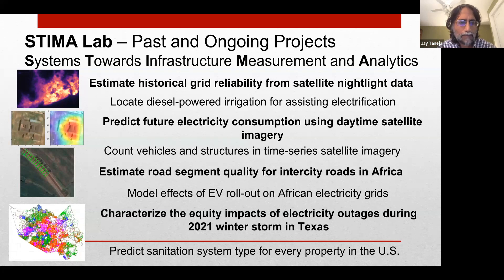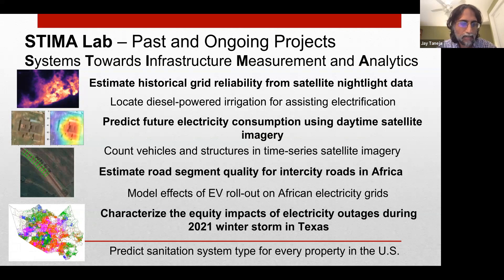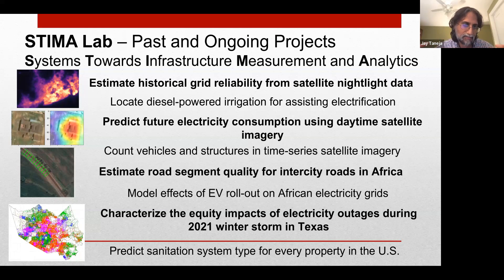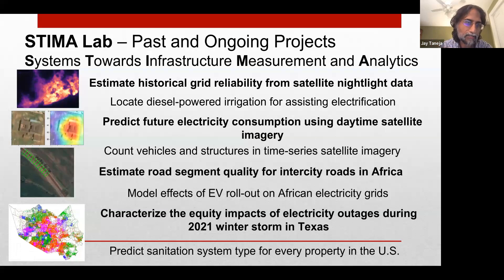We're really thinking about what might be different in developing regions and infrastructure systems because of the constraints or other local conditions. The grand majority of the work is in Africa, with a couple of US domestic projects as well. The through line is measurement and infrastructure — looking at outages in a large event in Texas, as well as looking at the sanitation system and trying to understand delivery services for each and every single property. At the end, while measuring infrastructure and highlighting service performance, there are clear opportunities to understand equity implications of infrastructure as well.